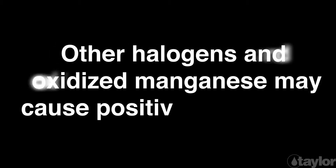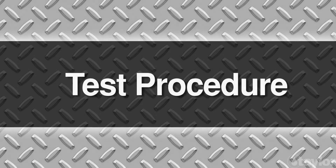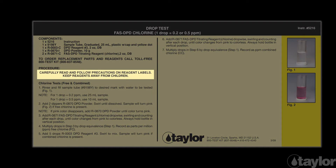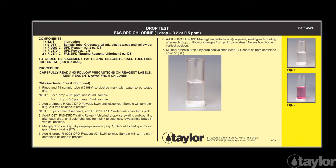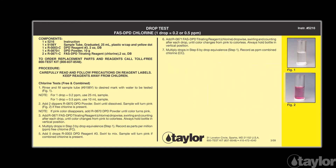Other halogens and oxidized manganese may cause positive interference. Before beginning this or any other Taylor test, it is best to read the instructions through to the end. Familiarizing yourself with all the steps to come is particularly important if the test is new to you or if the kit is newly purchased, as sometimes our procedures change.